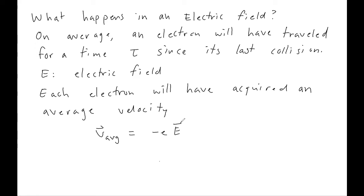The average velocity acquired is minus e times the electric field vector E times the relaxation time tau, divided by m. This is just expressing Newton's second law for the electron: the total acceleration in the presence of field E is minus eE/m, and the electron has accelerated on average for time tau since its last collision. So the average velocity of all electrons in the presence of electric field E is minus eEτ/m.